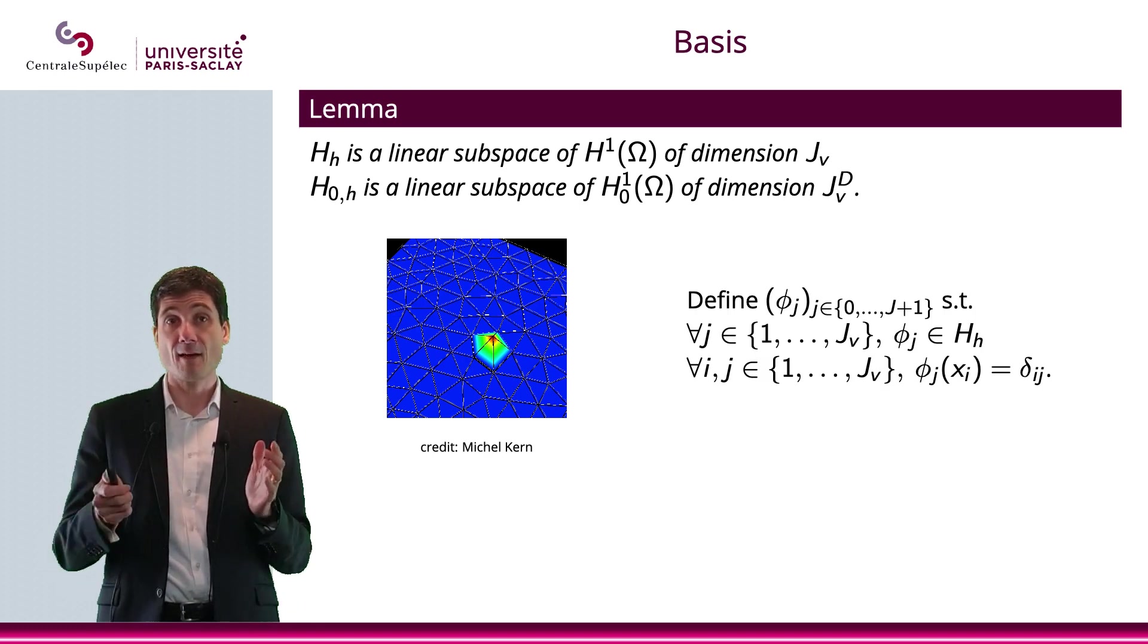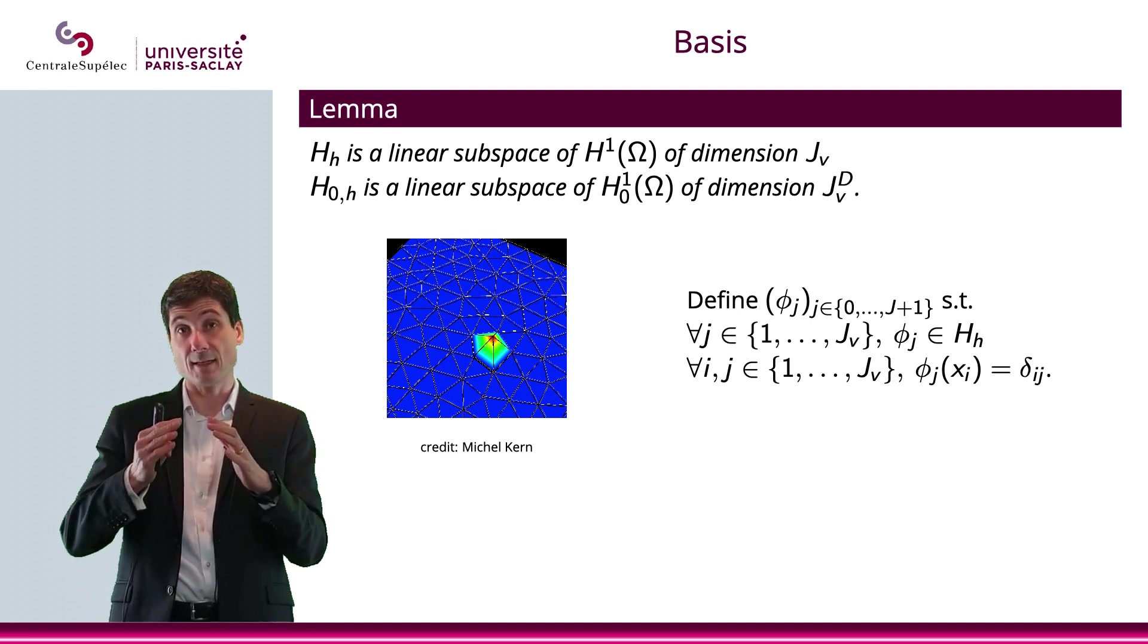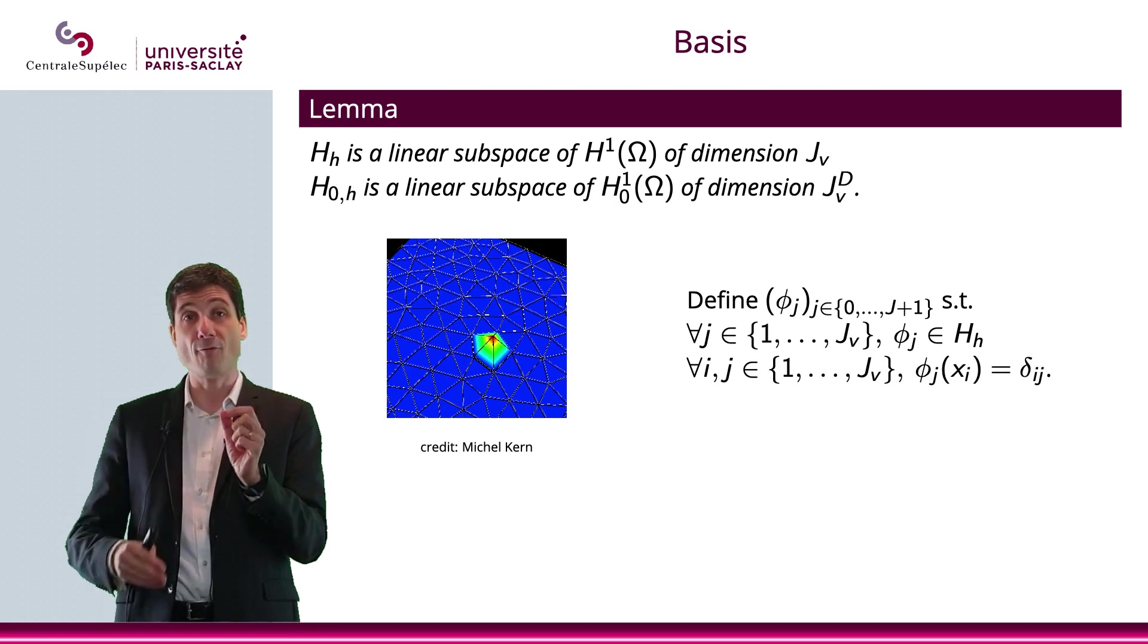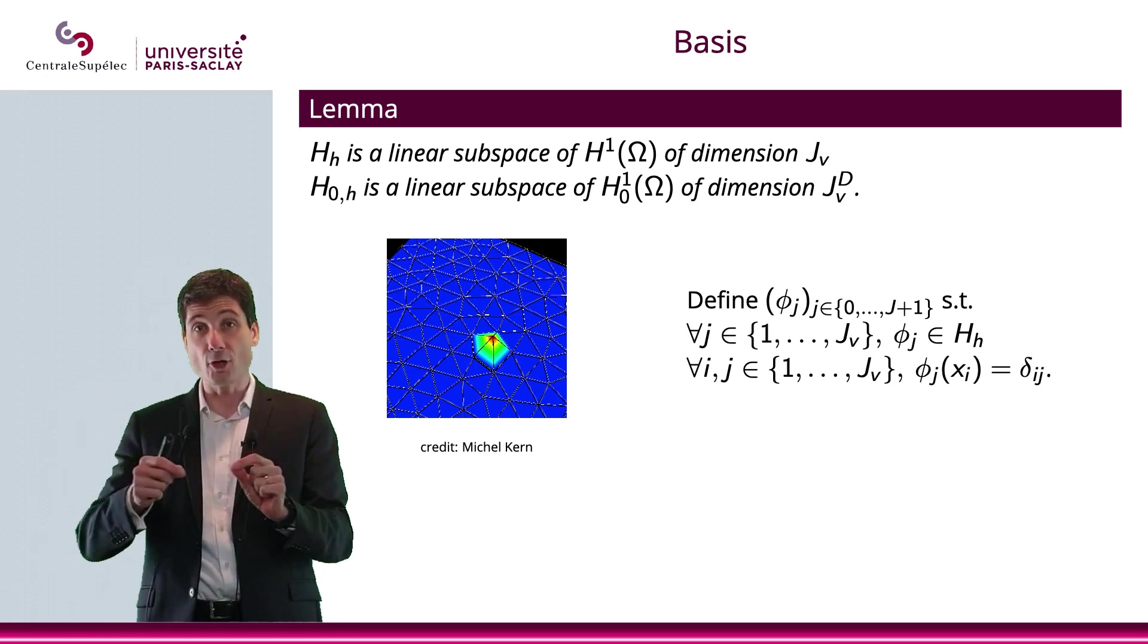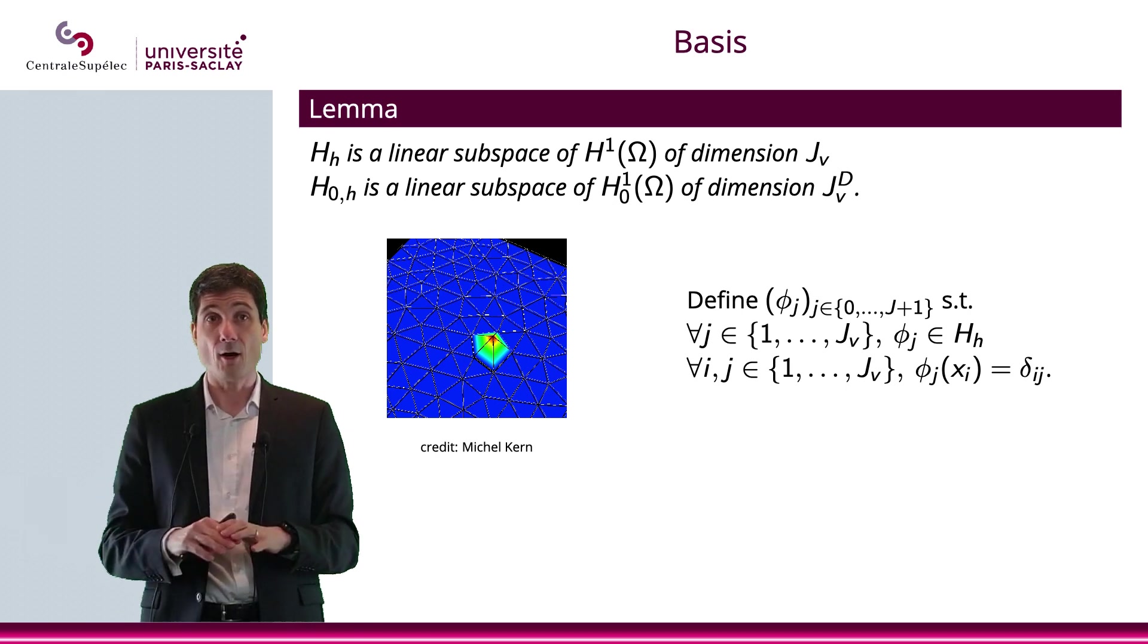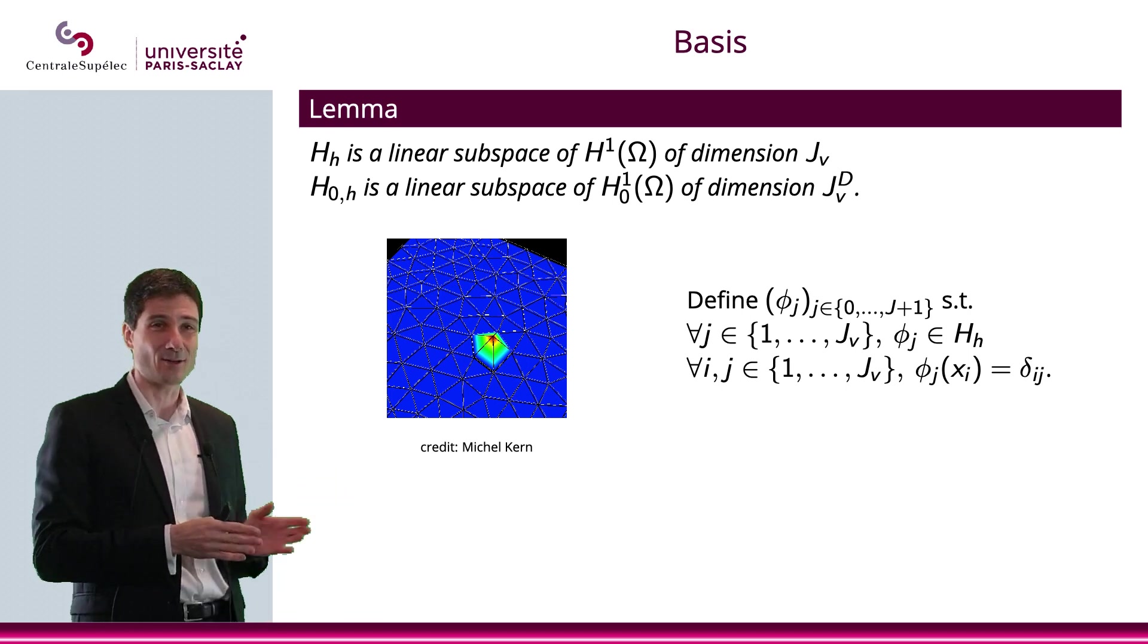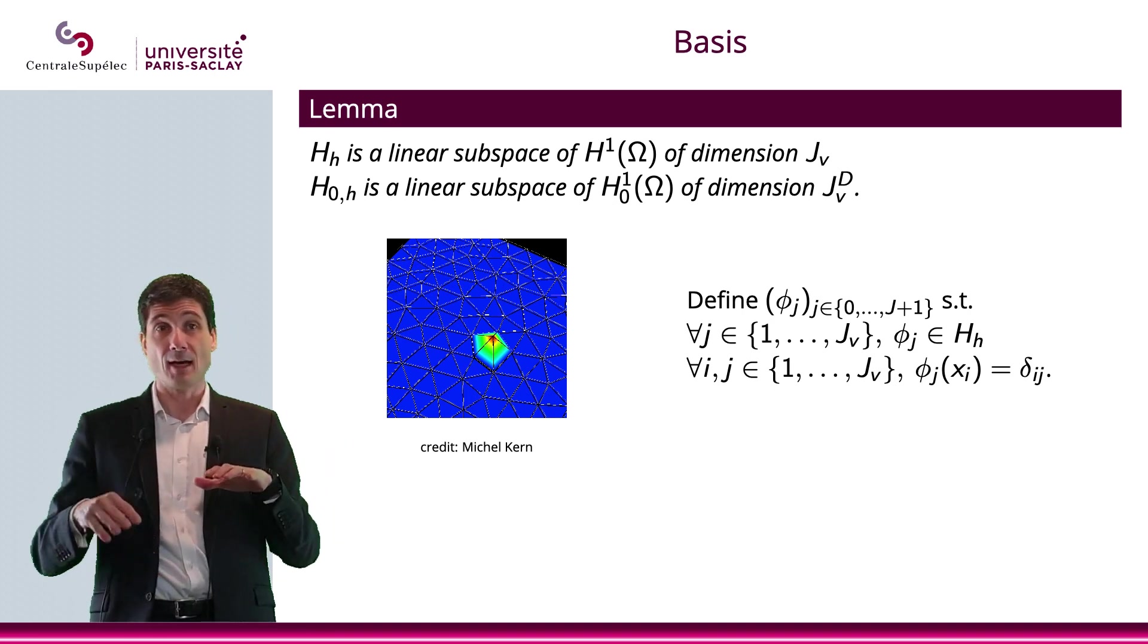And we will consider this basis phi J, which is a hat function. It's in dimension 2, so it goes from R2 into R, or from omega into R, actually. And what happens is that it will have the value 1 at XI. And when you are at any other node around it, then it will be equal to 0, and then obviously it will be equal to 0 from there all the way on your domain omega. So here is a pretty nice picture of it, and I would like to thank Michel Kern for that graph. So you can see that this is one of the hat functions, and basically you have plenty of them, and that is your basis.